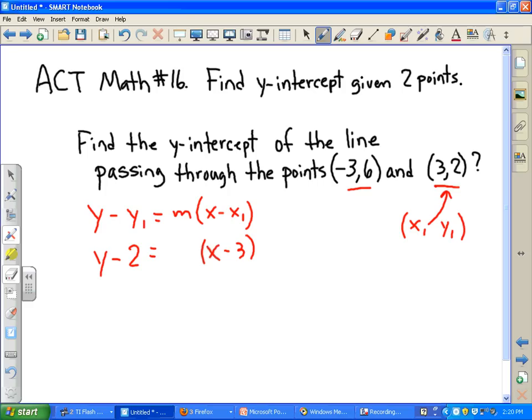And we need to find the slope. The slope is always y2 minus y1 over x2 minus x1. So in this case, we could take 6 minus 2, that's 4.